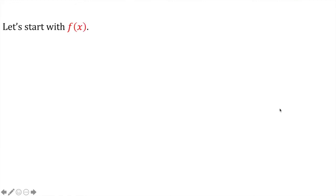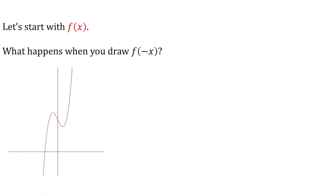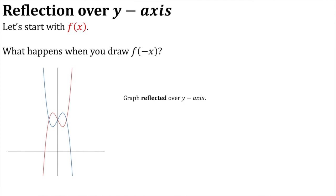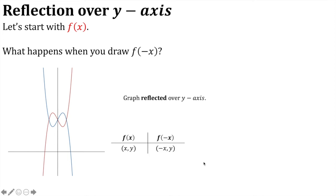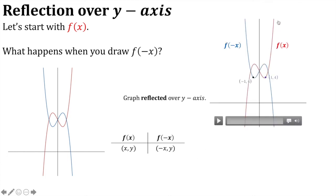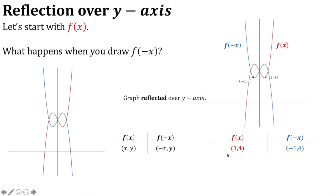One final transformation — starting with f of x, what happens when we draw f(−x)? The graph is reflected over the y-axis, so the y-axis is the line of symmetry. Our point (x, y) becomes (−x, y). For example, on f of x, if we had the point (1, 4), then on the graph of f(−x) that becomes (−1, 4).